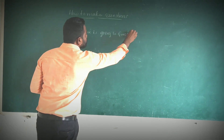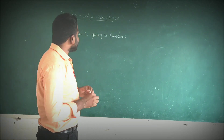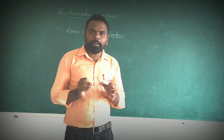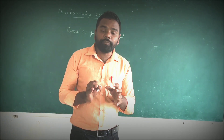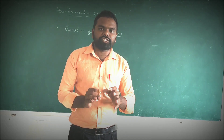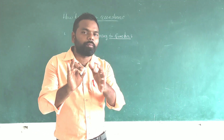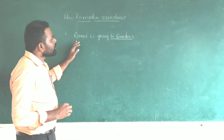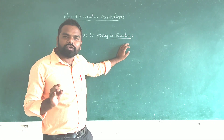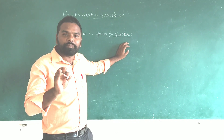For example: Ramu is going to Gundur. If you see clearly, the part 'Gundur' is underlined. Whatever part is underlined, we need to get that underlined part as an answer. To get the underlined part as an answer, we have to make a WH question. We need to understand this very clearly.